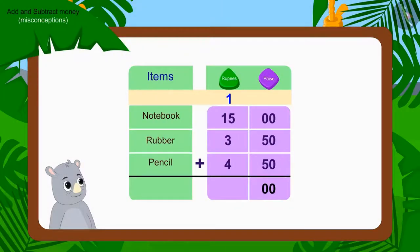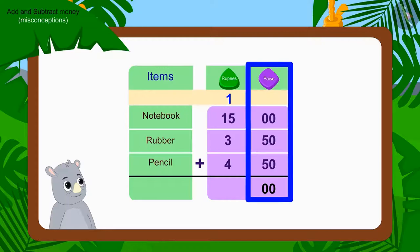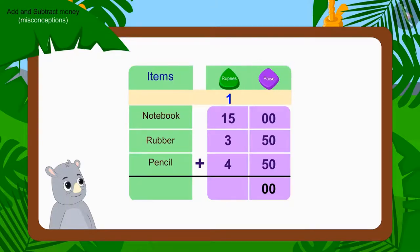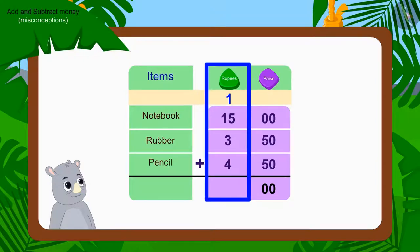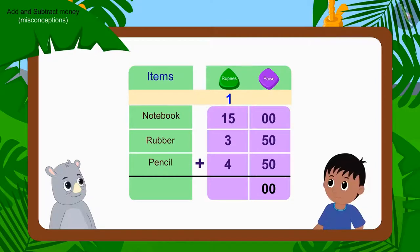See kids, Gaggu added 100 paise correctly, but he forgot to write the carryover made from it. Now can you tell, by adding rupees, how much Raju actually has to pay for the goods to Gaggu? If you want, you can pause the video and find the answer.